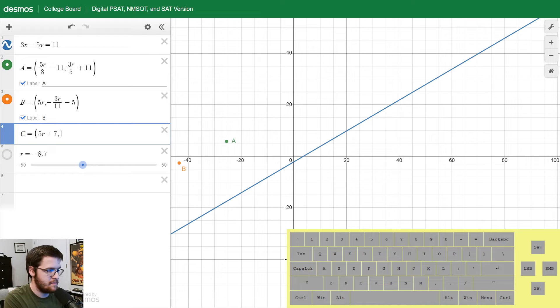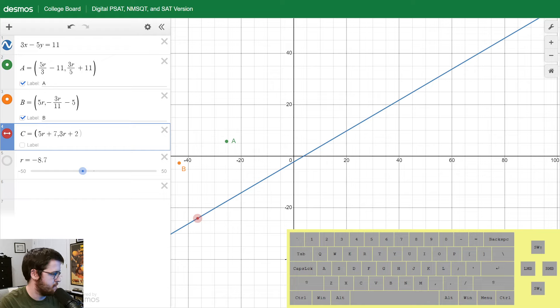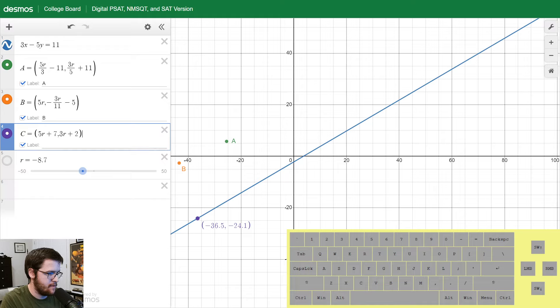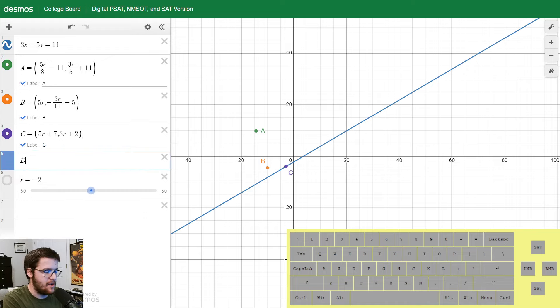Let's try option C: 5R plus 7, comma 3R plus 2. We'll use purple, turn the drag off, and label this capital C. It seems like C is actually on an infinite solution path. That is like the polar opposite of what we want. We want no solution, so that's wrong too. It's looking like it's answer choice D, but let's make sure. Let's type it in.